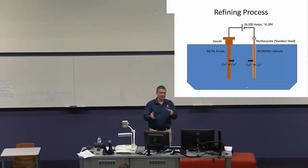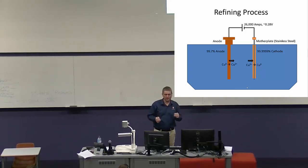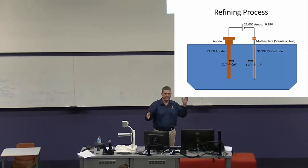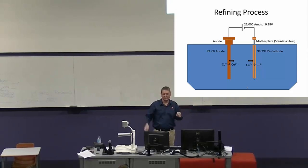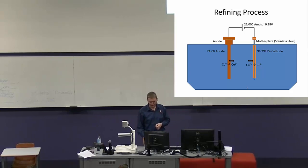Our cell isn't just one anode and one cathode — we actually have 45 anodes and 44 cathodes, with one cathode between every set of anodes. That's to get the maximum efficiency out of each cell.